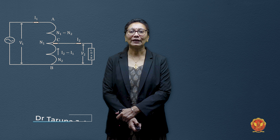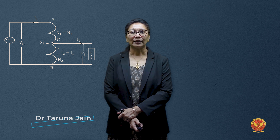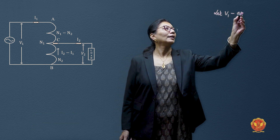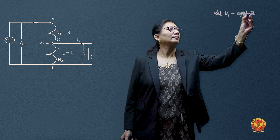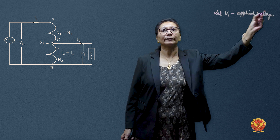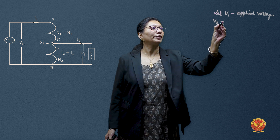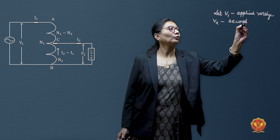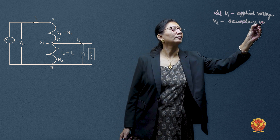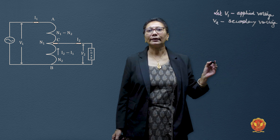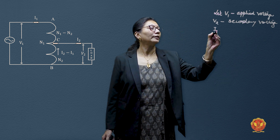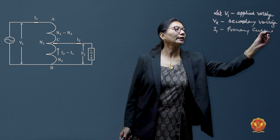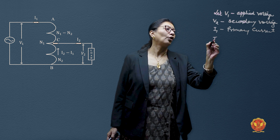Let us check how to draw the equivalent circuit for an autotransformer. V1 is the applied voltage on the primary side, V2 is the secondary side voltage available — that is, the secondary voltage across the load. I1 is the primary current, and I2 is the secondary current or load current.